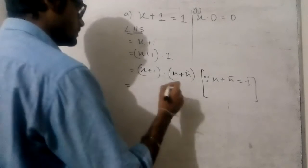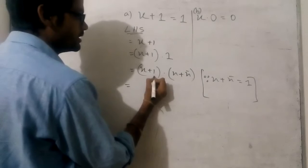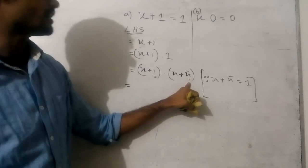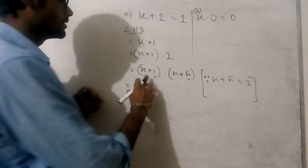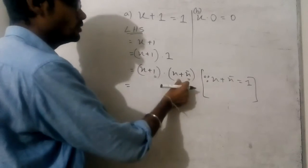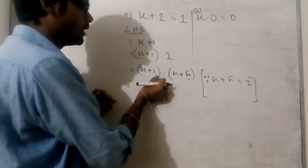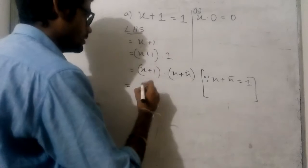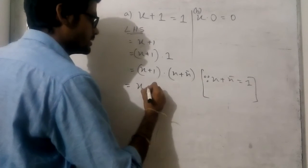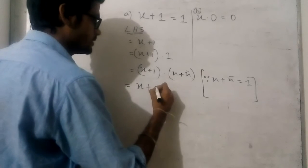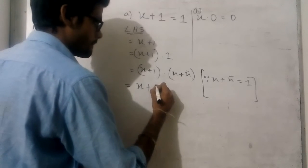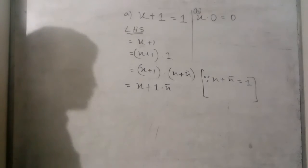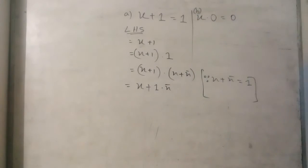Now, if we consider these values, we can see that 1 and x bar are different from x. Here we can see x in these two, and 1 and x bar are different. So by using our postulate we can write x plus 1 into x bar.